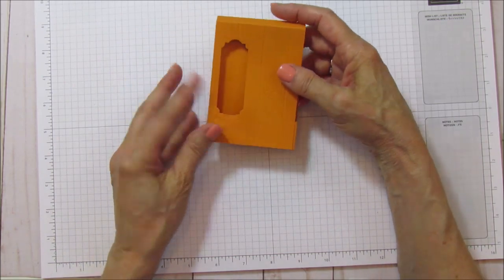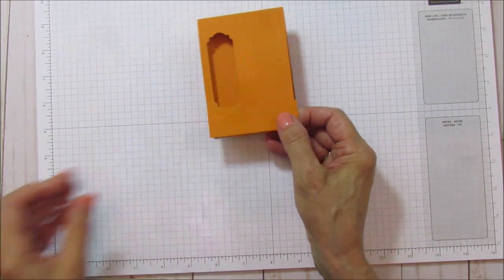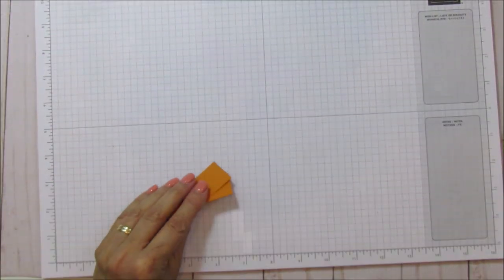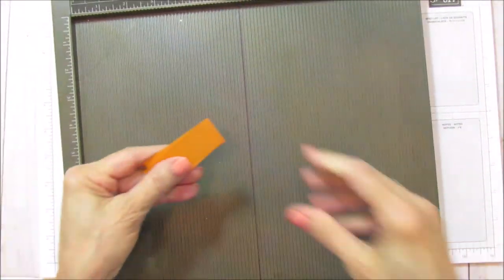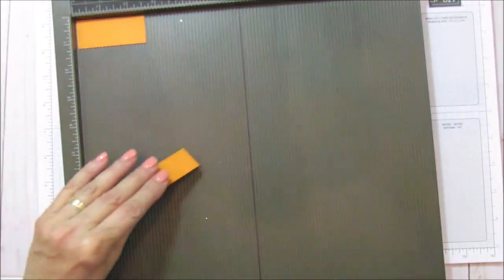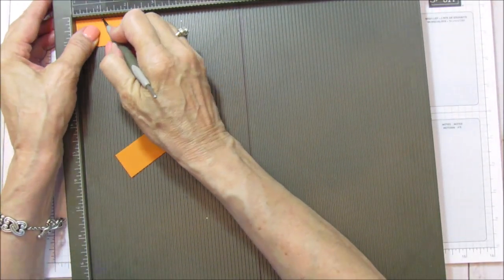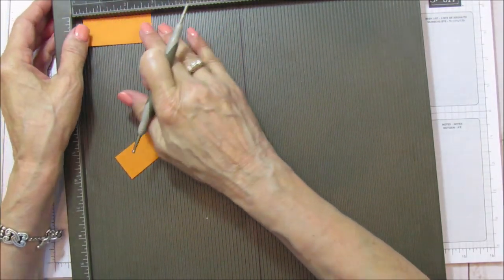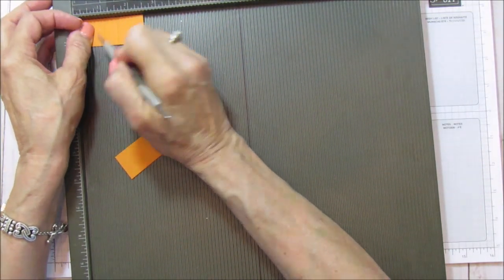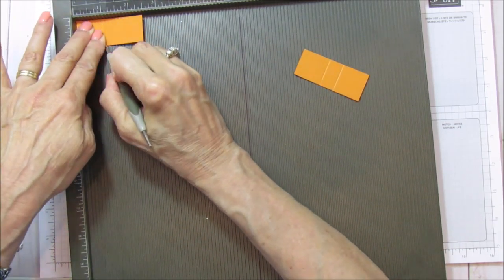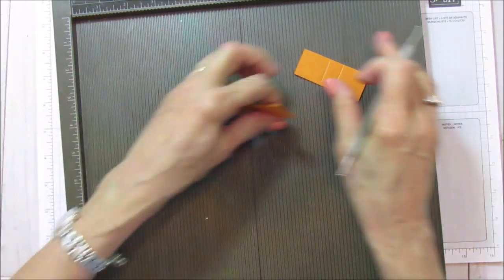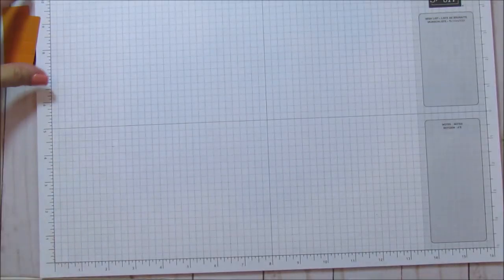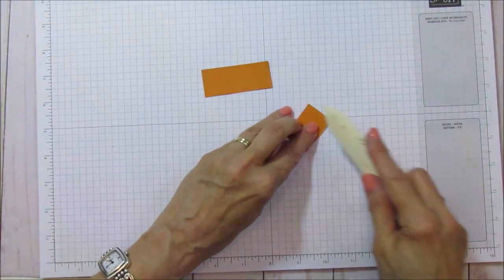All right, so now we have our basic box here, but what we're going to need to do is we're going to need to score this at one inch on each side. I should have done this when I had this up here, but we're going to score it at one inch, turn it around, score it at one inch again. Do the same on this one. That's it. We're going to sharpen those and then we're going to be ready to put them on our little box here.